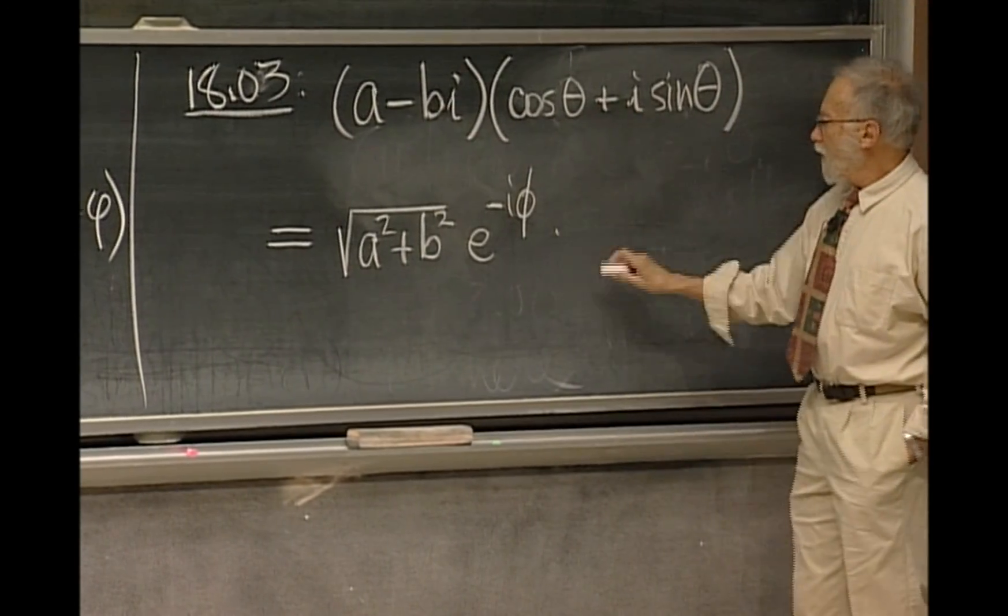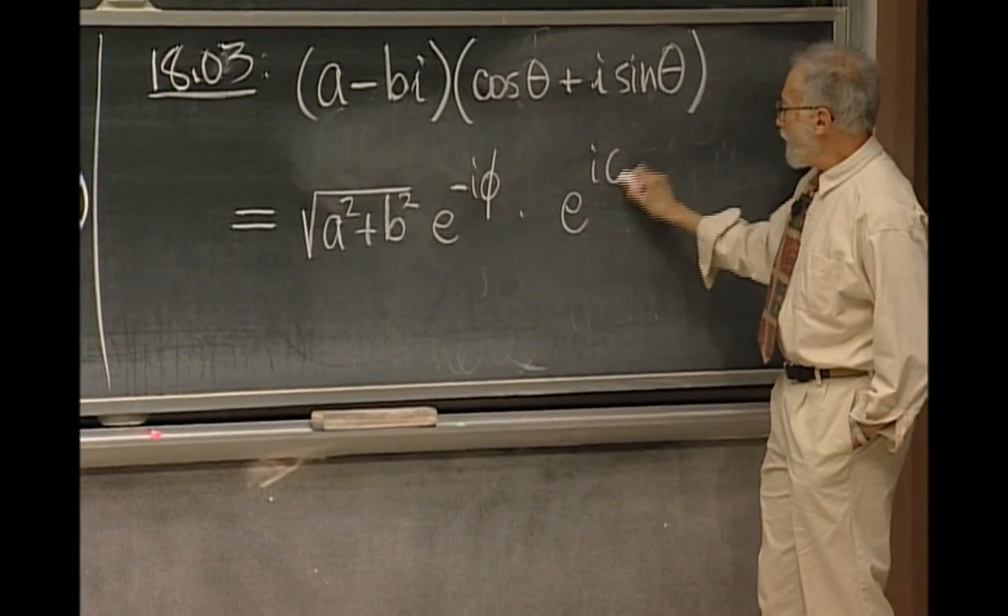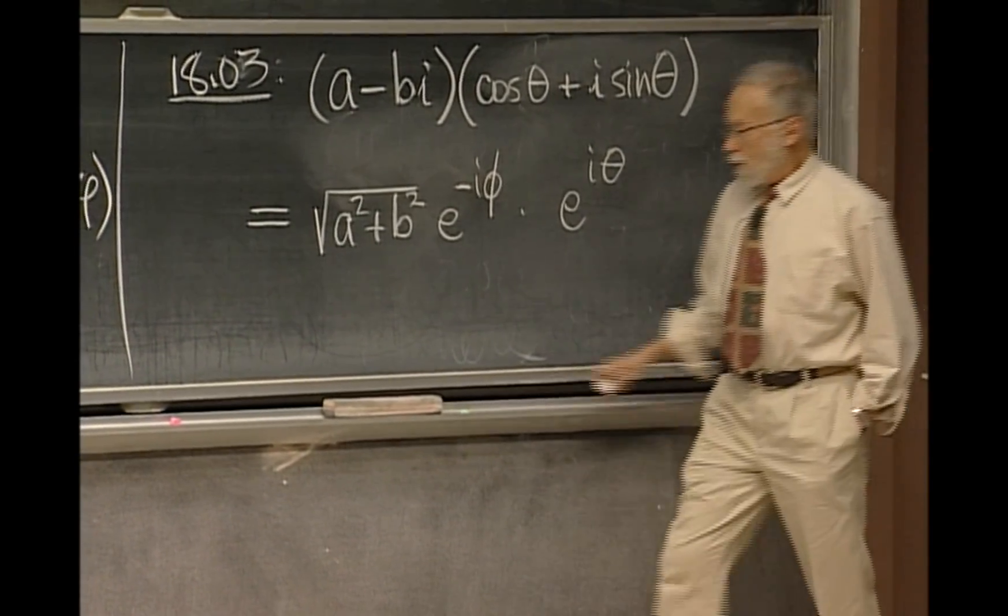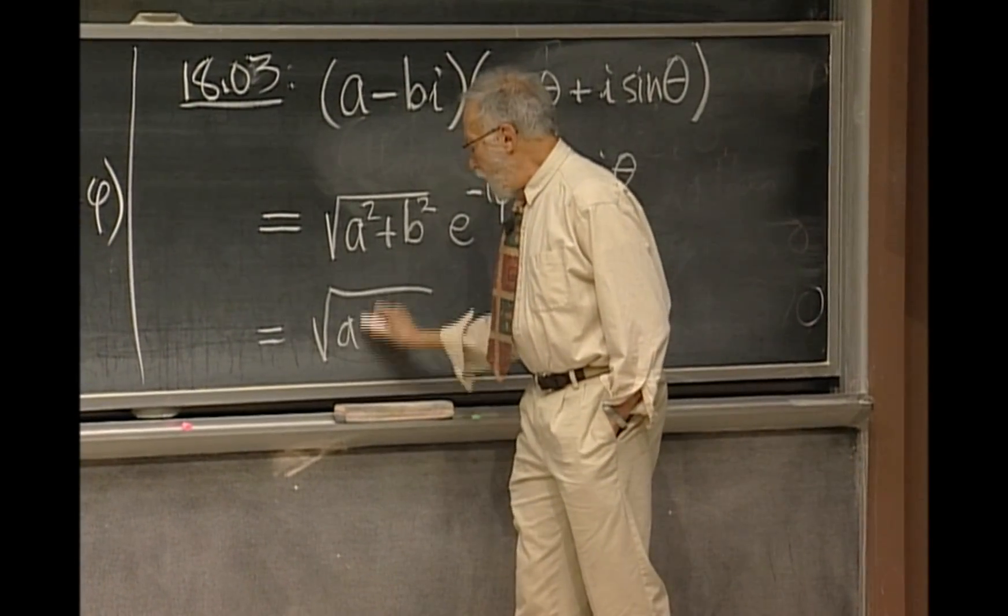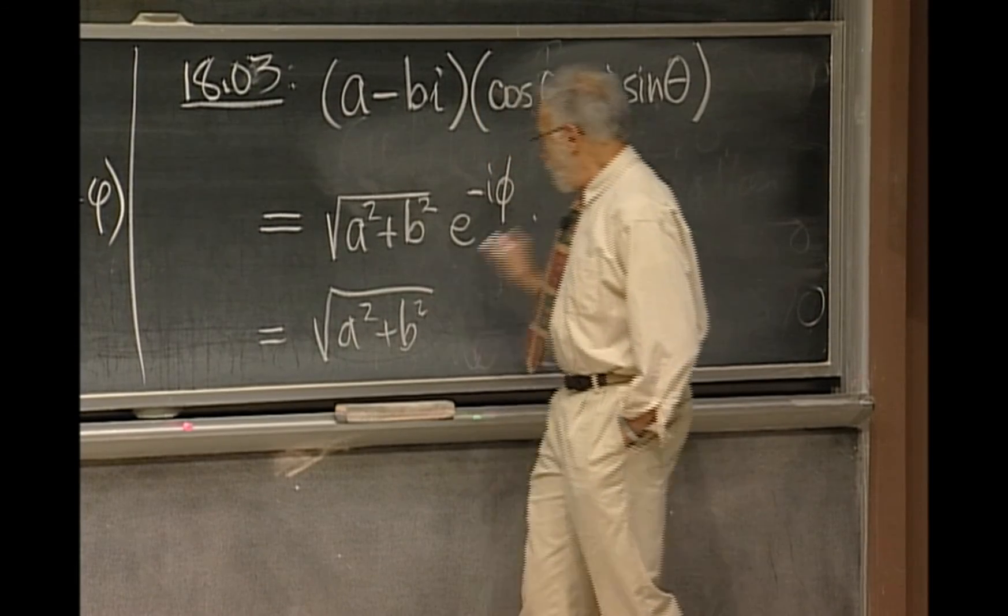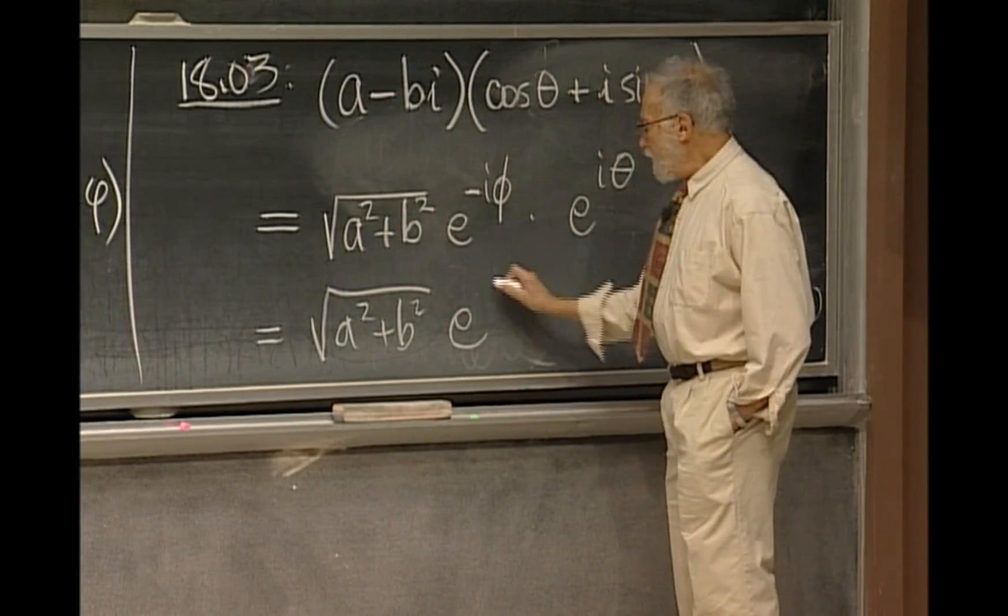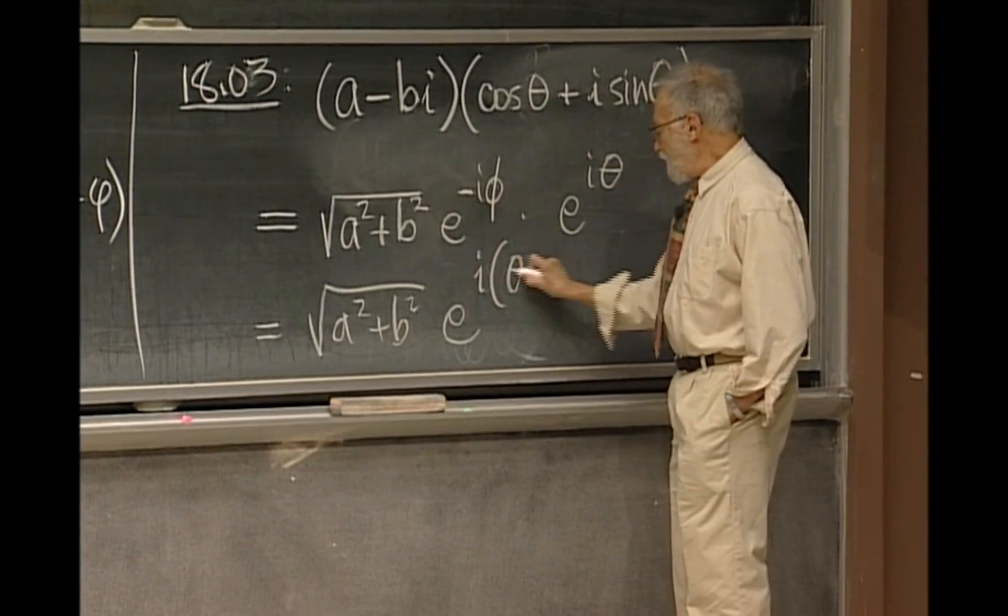And how about the second guy? Well, the second guy is e to the iθ. So, what's the product? It is A squared plus b squared, the square root, times e to the i times θ minus φ.